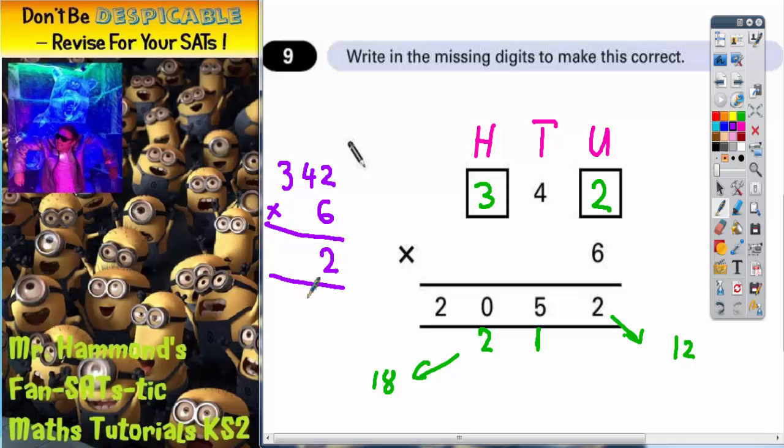6 twos are 12. Put the 2 in and carry the 1. 6 fours are 24 plus that 1 is 25. Put your 5 in and carry your 2. And 6 times 3 is 18 plus the 2 is 20. So it does indeed get us back to 2052. So the missing digits are 3 in the 100 column and 2 in the units column making the number 342.